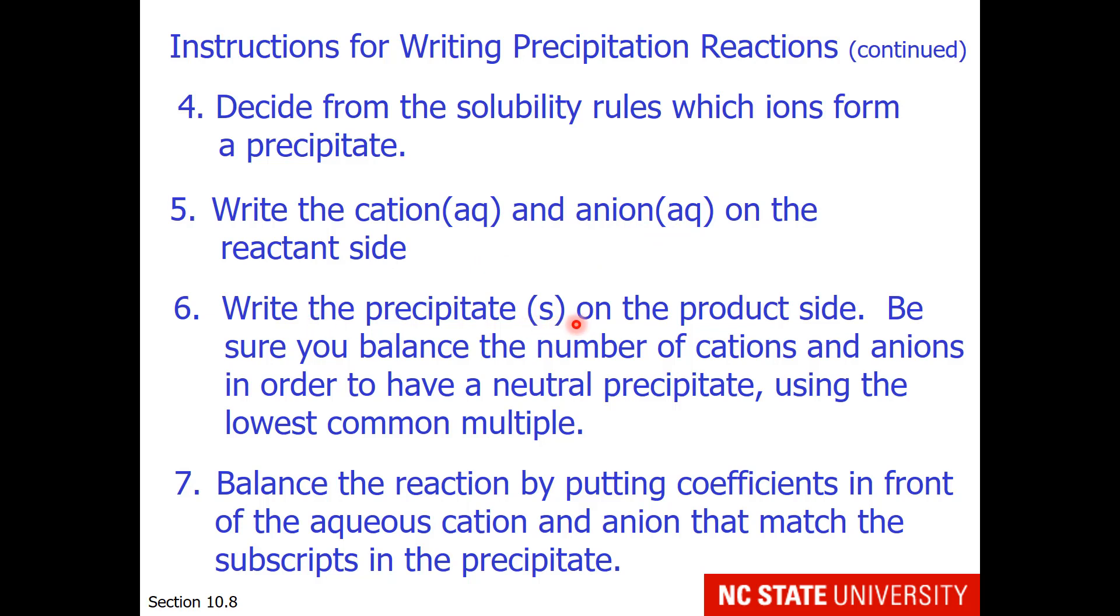And of course, be sure you balance the number of cations and anions in order to have a neutral precipitate using the lowest common multiple. In other words, crisscross. Finally, balance the reaction by putting coefficients in front of the aqueous cation and anion that match the subscripts in the precipitate.